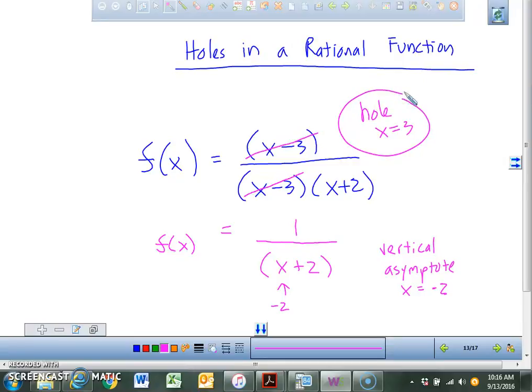So what I'm going to do is I'm going to explain to you how to draw a hole in a graph. Because a hole is different than an asymptote. A hole is always created whenever something in the numerator and the denominator cancel out.